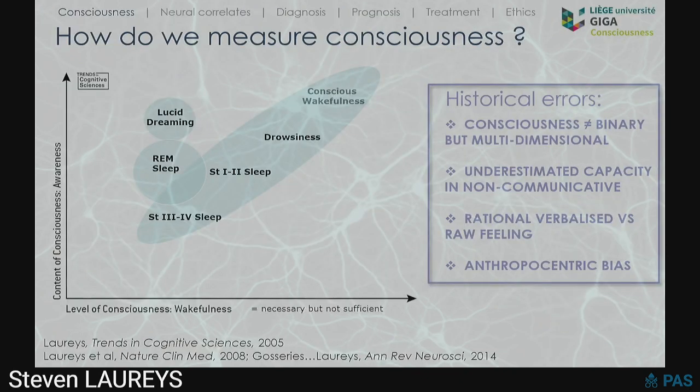That helps us do better than we can do at the bedside to measure consciousness, where basically we have no satisfactory theory. As clinicians, we reduce this complexity to two main components: the level of consciousness — wakefulness — assessed straightforwardly by looking at the presence of eye-opening, and the content of consciousness or awareness — awareness of the external and internal worlds.